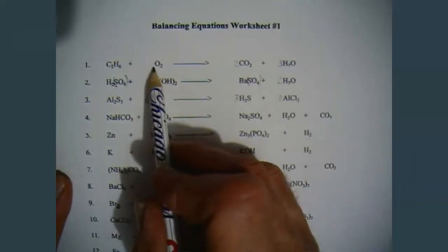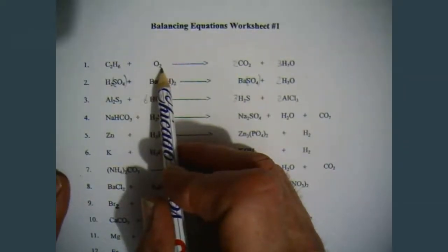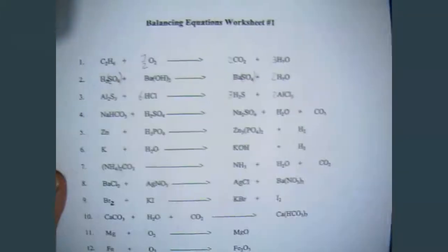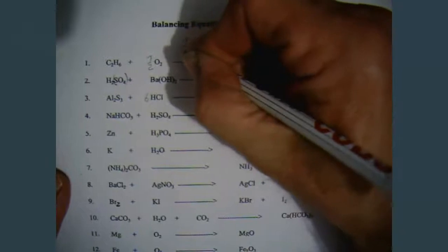No matter what we put in front of here, though, we're going to get an even number because we have to multiply it by two. So you take how many you need divided by how many you have. Well, I need seven and I have two. Seven over two. Well, seven over two times two is equal to seven.